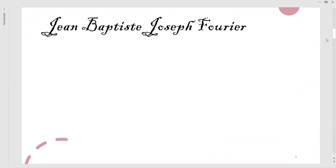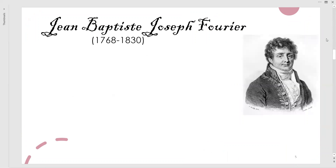Most people in engineering or mathematics know the name Fourier, but most people don't know his full name. His full name is Jean Baptiste Joseph Fourier. He lived in the era between 1768 and 1830. Most people have not seen him, but you can Google and see his photo — it is his picture. He was one of the most handsome physicists or mathematicians ever in history.